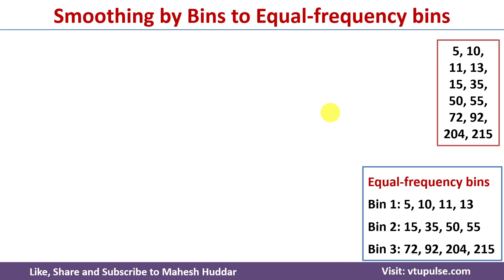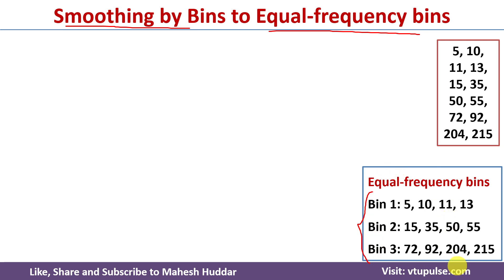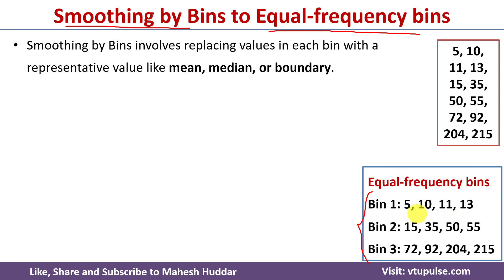Next we will go for smoothing techniques — smoothing by bins applied to equal frequency bins. Smoothing by bins means we apply these techniques to already created bins. Here we apply this technique to the equal frequency bins we already calculated. In the smoothing technique, we replace values in each bin with representative values like mean, median, or boundaries.